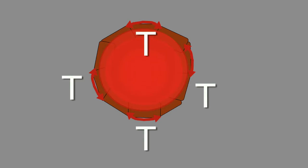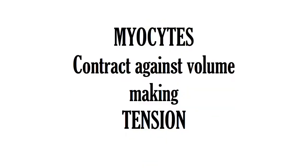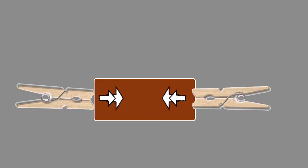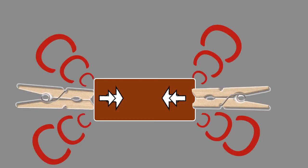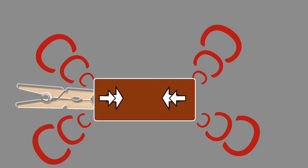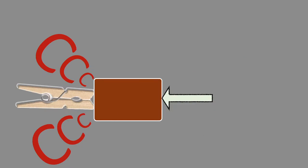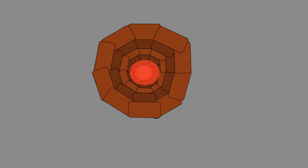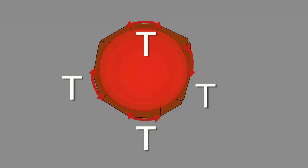Wall stress is simply the term we use to indicate the tension in one of those cells during systole. One of the main points of confusion when people are learning cardiac function for the first time is exactly where this tension is — and now you know. When we talk about tension during systole, we're talking about this tension running through the wall of the heart. It's the tension generated by contraction.